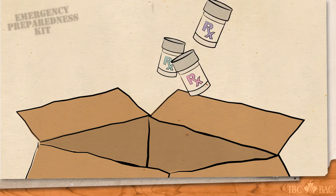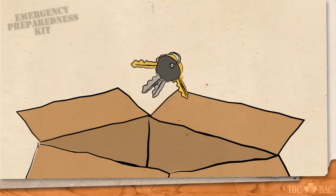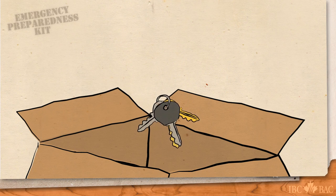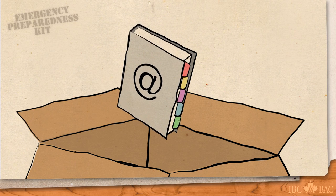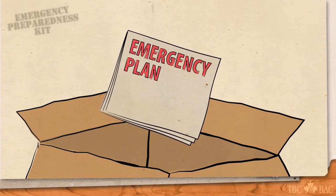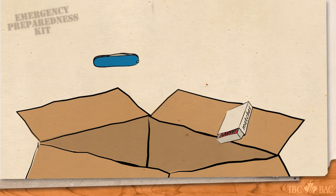Special needs items, such as prescription medications and infant formula. An extra set of keys for both your car and your home. Some cash. And contact information for friends and family, as well as a copy of your emergency plan. Be sure to add anything else that is important to your family.